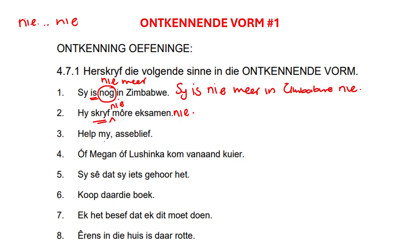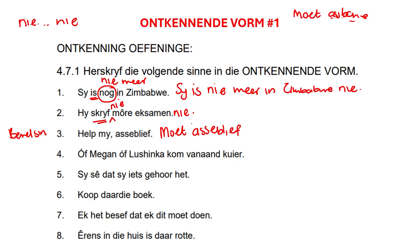Help my asseblief. This is a command sentence — a befelsin. We have to use 'Moenie' — a werkwoord and 'nie'. But because we have the word 'asseblief' here, we can't really say 'Moenie'. When we say 'asseblief' we always say 'Moet' something. So it's going to be: Moet my asseblief nie help nie.